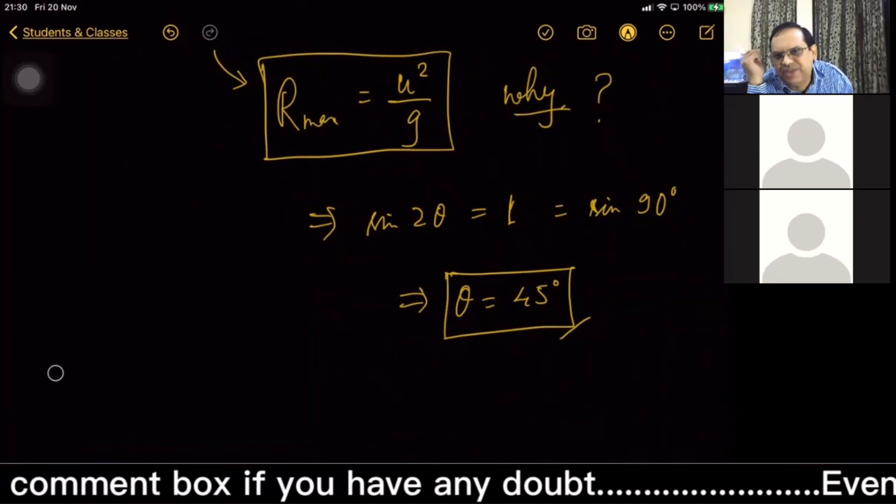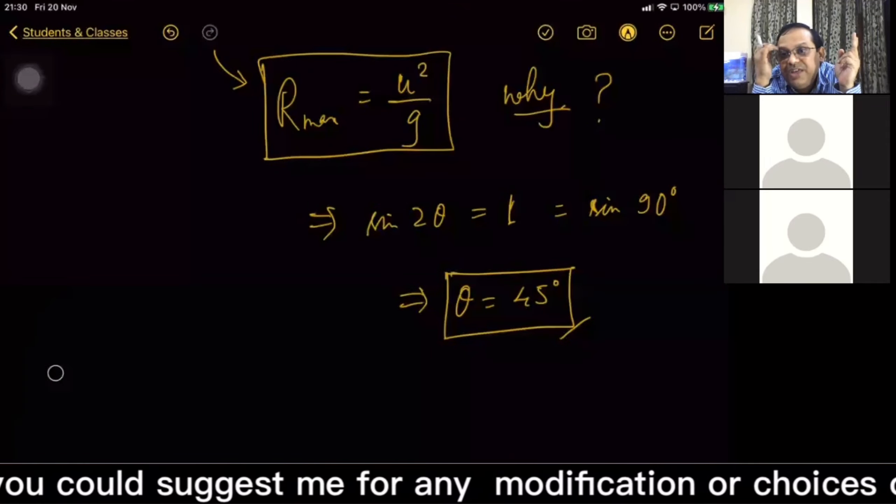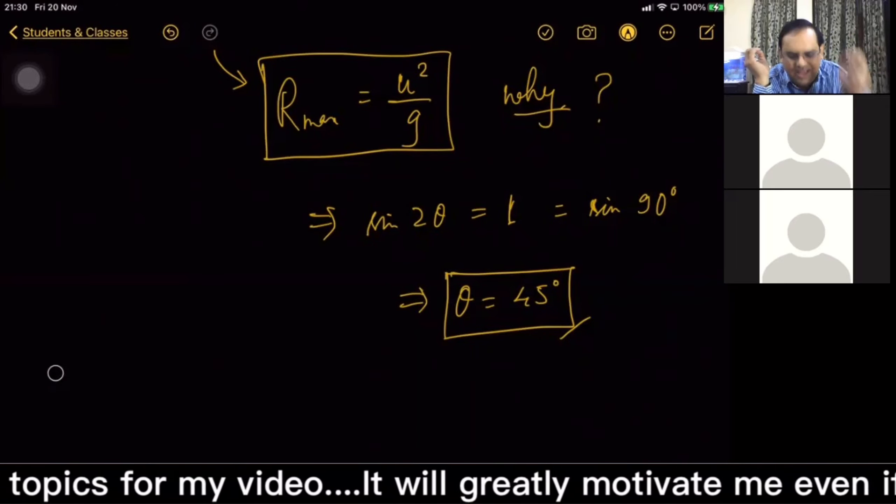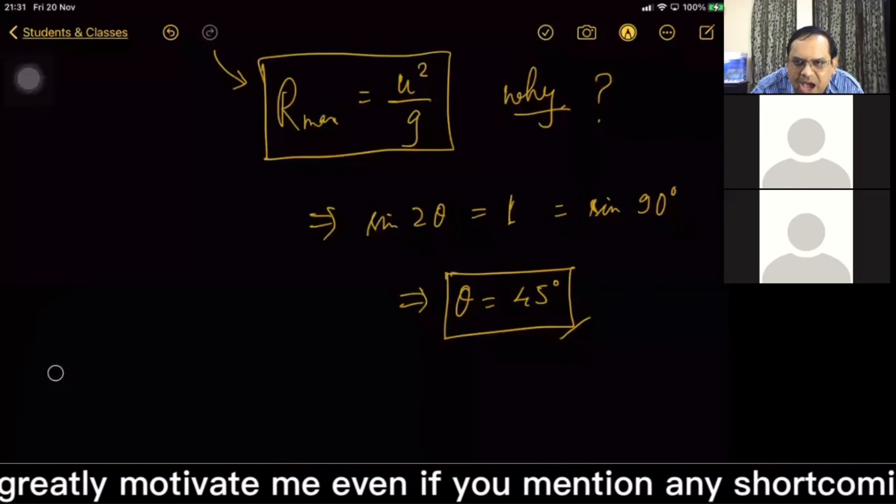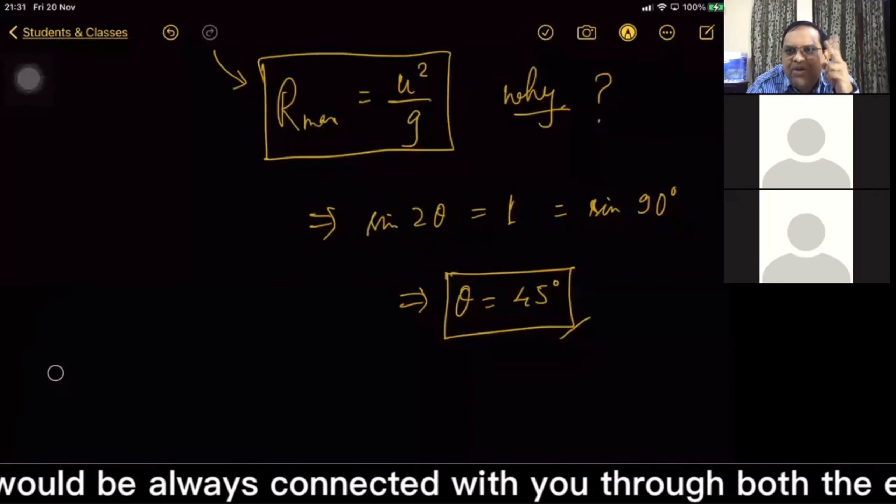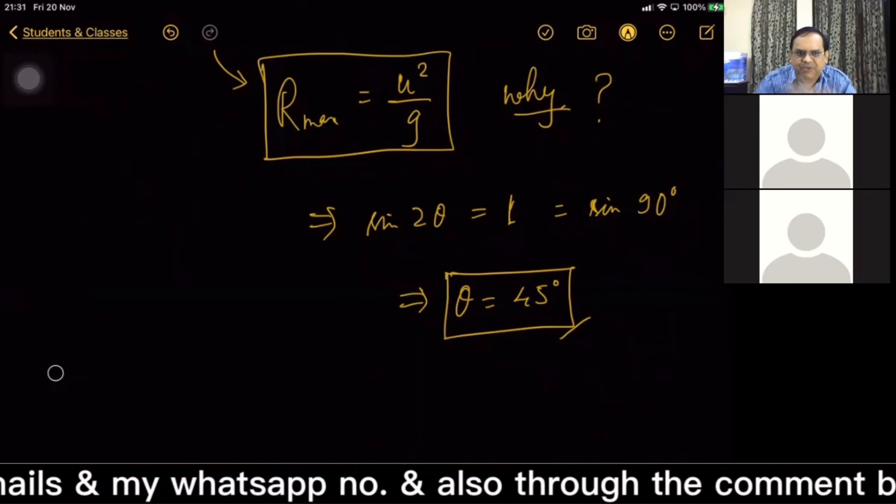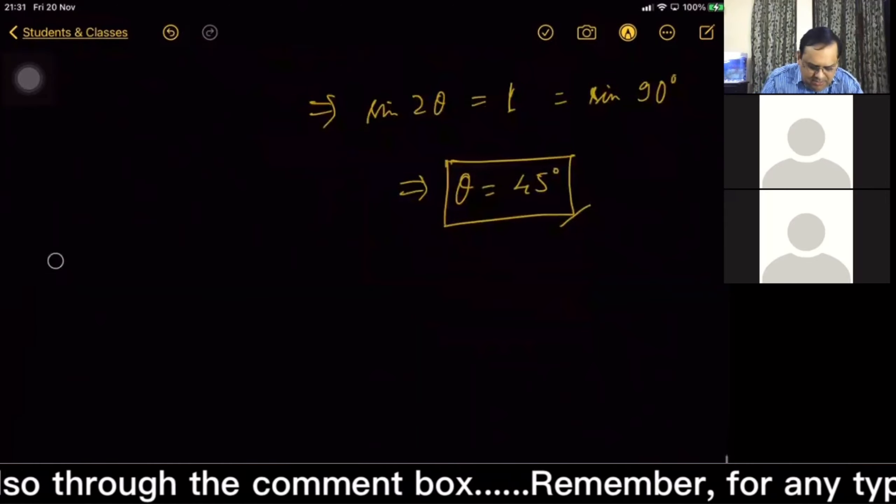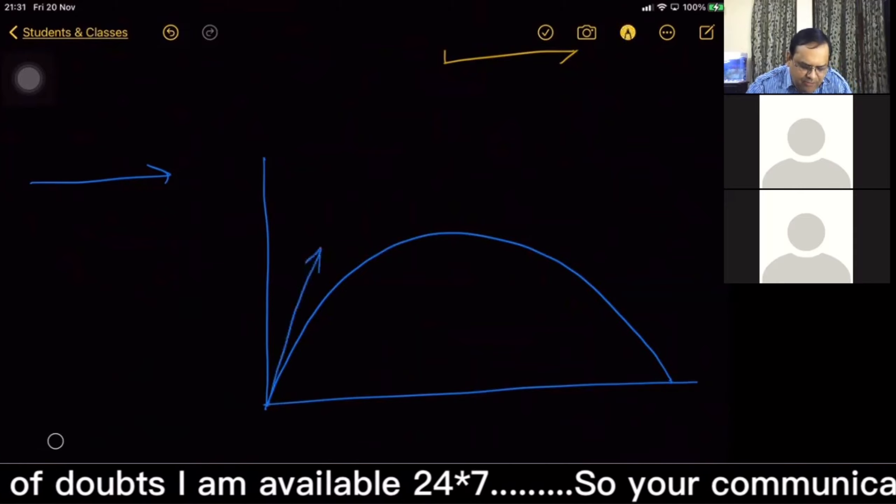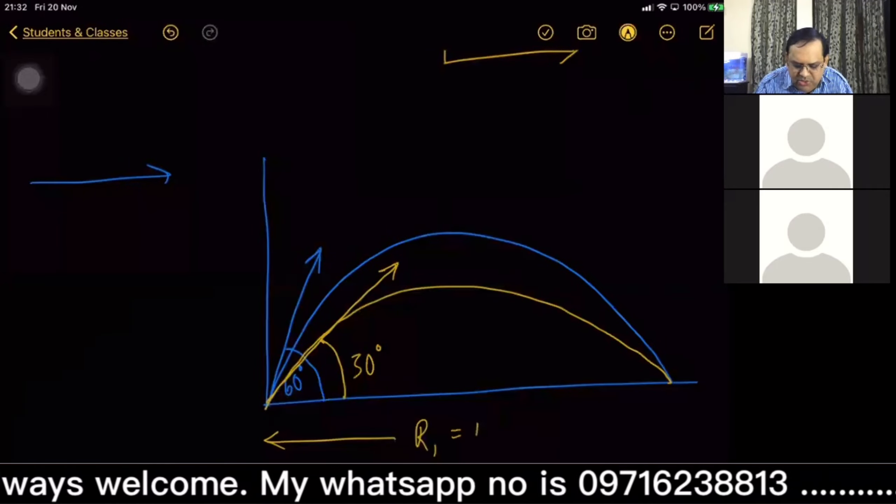And one more interesting point. Are you aware there are two sets of complementary angles at which R remains the same? Tell me, are you aware of a pair of two angles at which horizontal range remains the same? If you still didn't get, then I'll be helping you through this diagram.